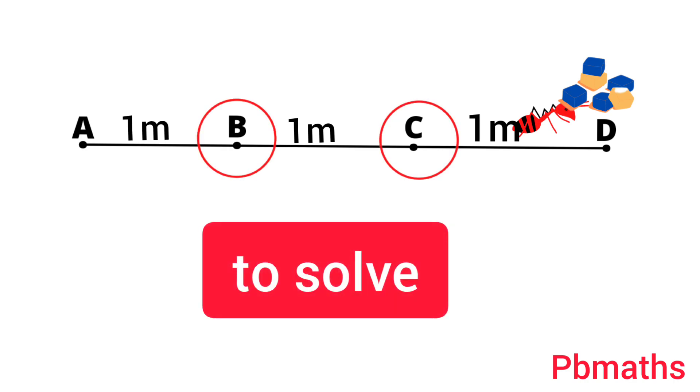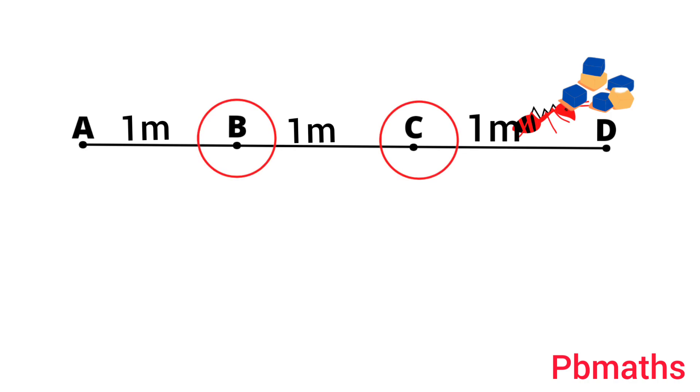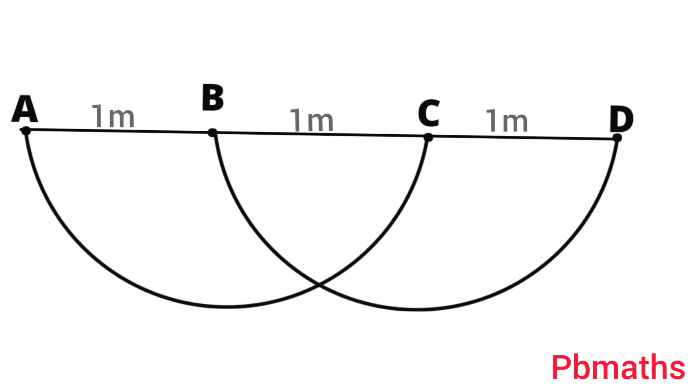To find out which is the minimum distance ant must travel to reach the sugar particle, let's first draw two semicircles of 1 meter radius at point B and point C. In these two semicircles, ant must not go so that it can save itself from this insect repellents.